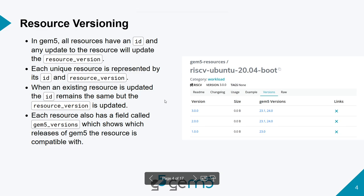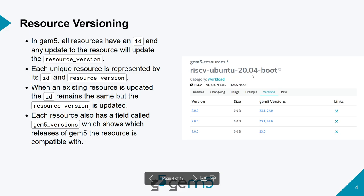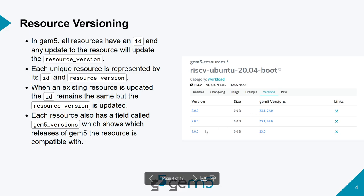Each resource is identified by its ID and a version. If we update the source — say we make a small change to a binary and recompile it — we update the version while keeping the same ID. The GEM5 versions field dictates which specific version of the resource is tested to run on which release of GEM5. For example, version 1 runs on GEM5 release 23.0, while versions 2 and 3 run on releases 23.1 and 24.0.